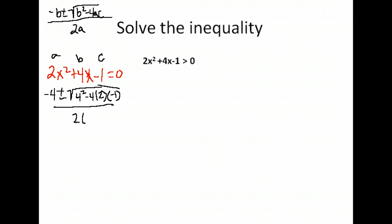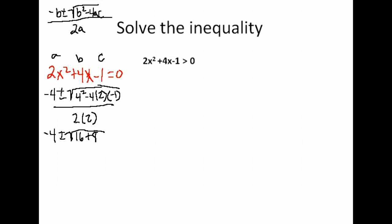All over 2 times a, which is 2. Simplifying under the radical: 4 squared is 16, and 4 times 2 times 1 is 8 — it's positive because negative 4 times positive 2 is negative 8, times negative 1 makes it positive 8. Watch your signs carefully. And 2 times 2 is 4. Adding 16 plus 8 gives us 24.